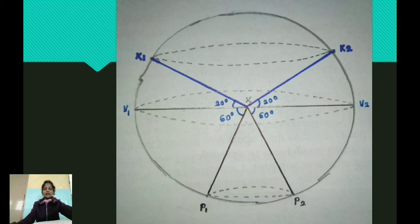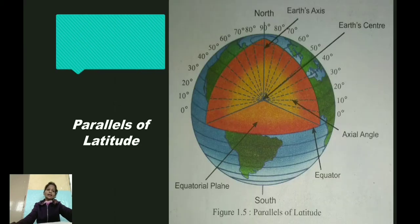But the distances x k1 and x p2 are the same because we are dealing with a sphere. Note that though these lines appear to be ellipses in the diagram, on the globe they are circles. The circles thus created at some angular distance from the center of the earth are parallel to one another. Hence, they are called parallels of latitude.